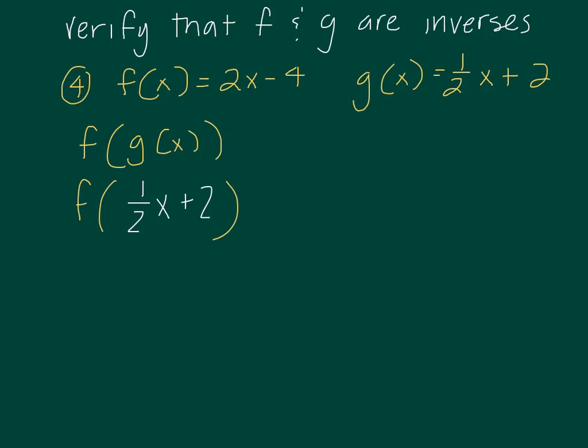Which, once again, just to remind us, means in function f, wherever there's an x, I'm replacing it with 1 half x plus 2. So I get 2 times 1 half x plus 2 minus 4. Because all I did, I took 2x minus 4 and I substituted in for x. So I'm going to go ahead and distribute, and I get x plus 4 minus 4, which is x. So we're halfway there.